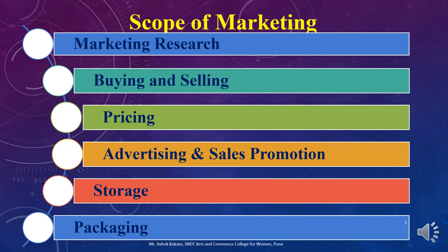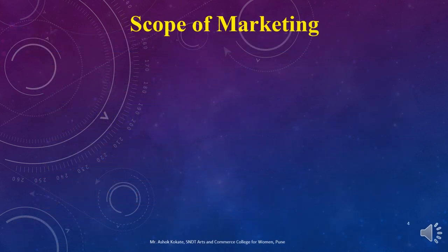The next scope is packaging, which plays a very important role. Packaging is not only for the safety of the product — in modern marketing, packaging is also important to attract customers. Packaging and labeling activities are part of the scope of marketing. Packaging means providing a container or wrapper to products for safety, attraction, and ease of use and transportation. Attracting the customer is a key strategy business houses use through packaging.